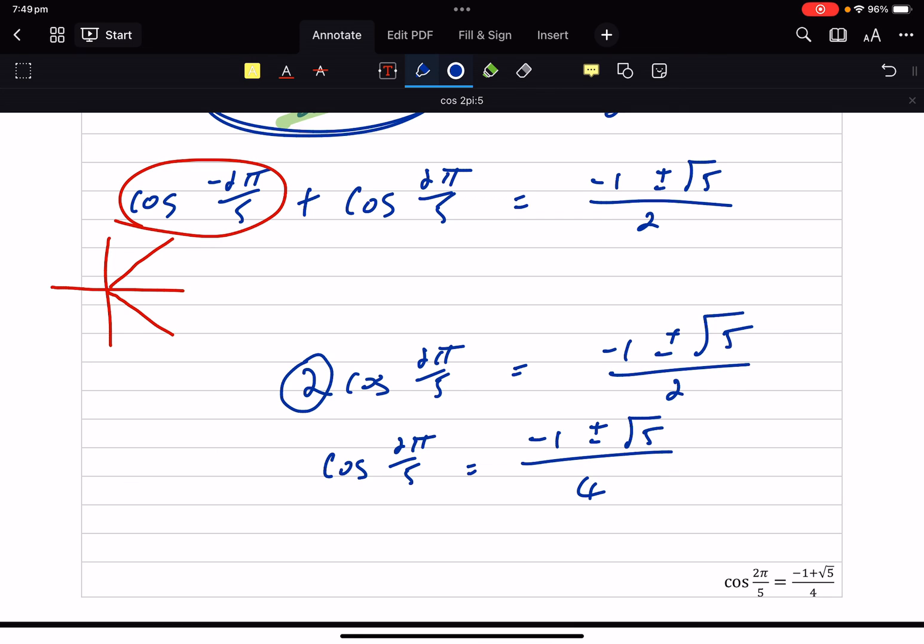Now you'll notice, if you've looked at the answer, the answer does not have the plus or minus. So let's just have a think about cos 2π/5. Cos 2π/5 is in the first quadrant, which has to be a positive value. So I really only want to take the positive value of that quadratic equation. So let's just ditch the negative. So that would be an application of the domain restriction.